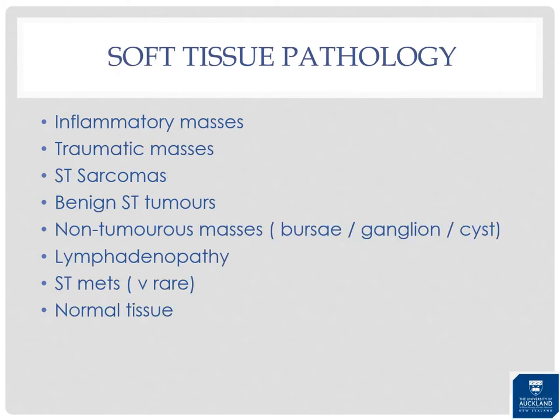The main soft tissue pathologies we look for are inflammatory masses, traumatic masses, malignant soft tissue masses like sarcomas, benign soft tissue tumors like lipomas, non-tumorous masses such as bursae and ganglion cysts, lymphadenopathy, soft tissue metastases, and sometimes it's actually just normal tissue we're evaluating.